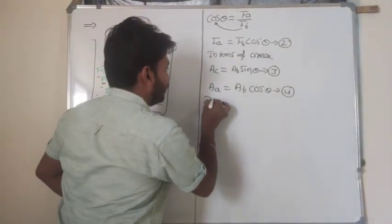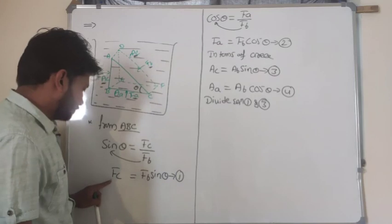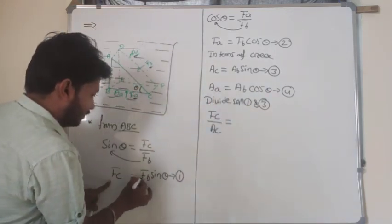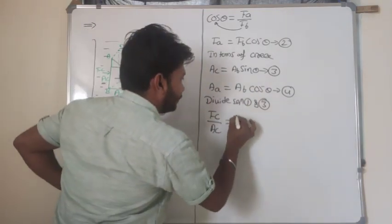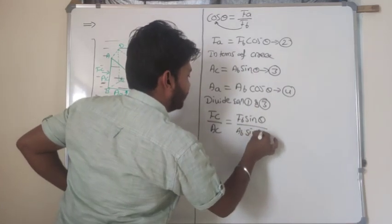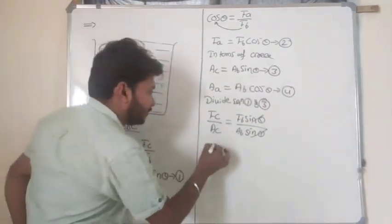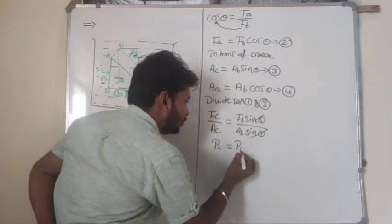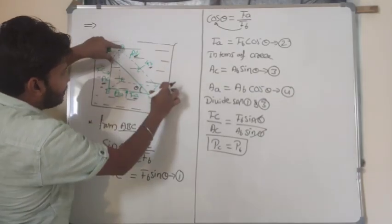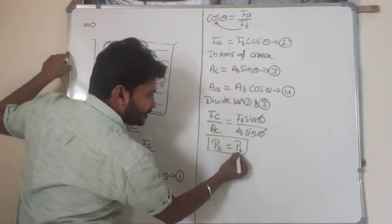Dividing equation 1 by equation 3: left side gives F_C over A_C, and the right side gives F_B sine theta over A_B sine theta. The sine theta terms cancel out. Since force divided by area is pressure, we get pressure at C equals pressure at B. This means whatever pressure acts on face C, the same pressure acts on face B.